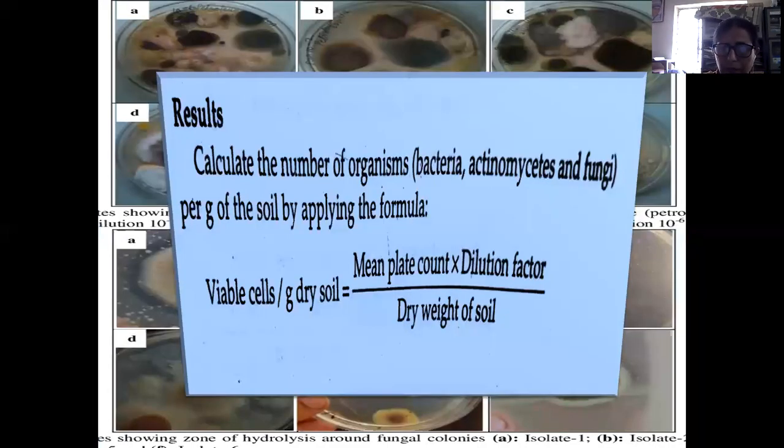Results can be given by the viable cells per gram dry soil: mean plate count into the dilution factor divided by dry weight of the soil.